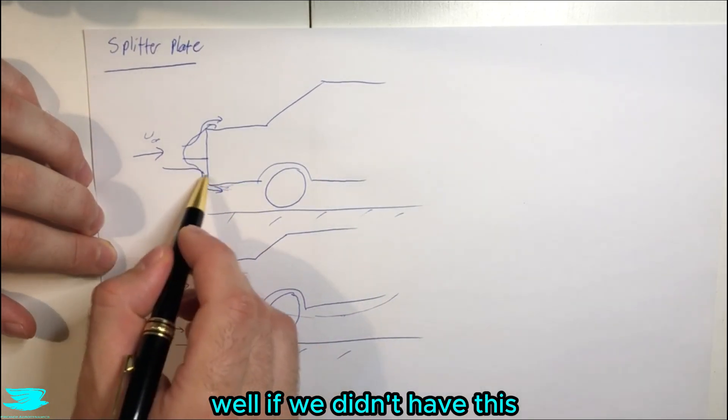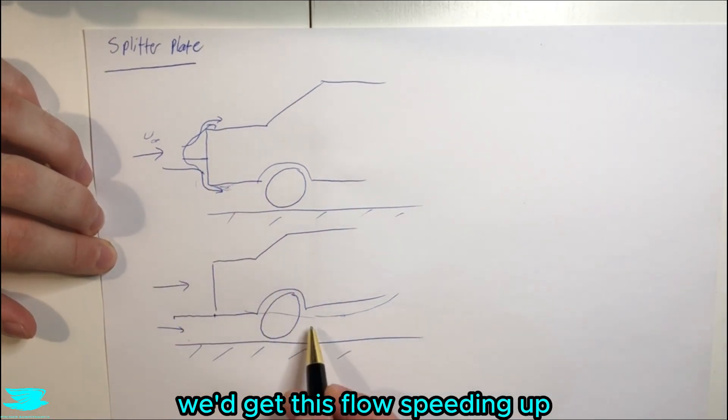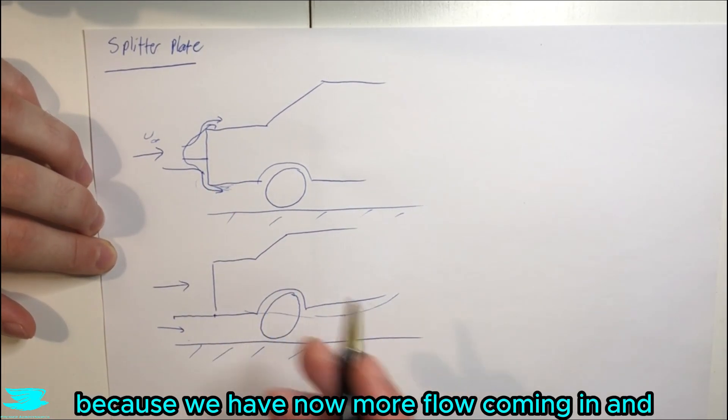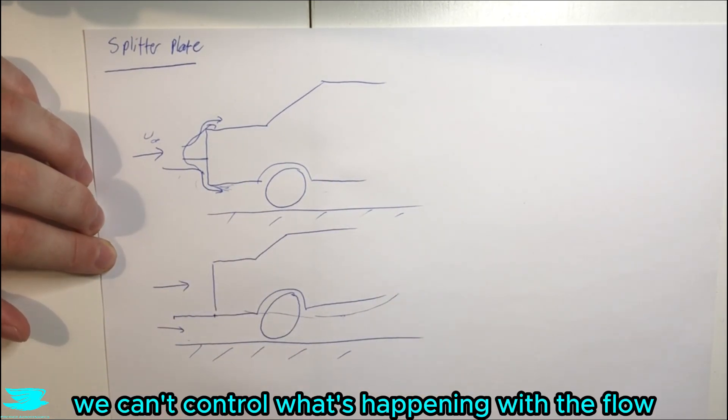Well, if we didn't have this splitter plate here, that would reduce how much we'd get this flow speeding up because we have now more flow coming in and it gets bleed out. We can't control what's happening with the flow.